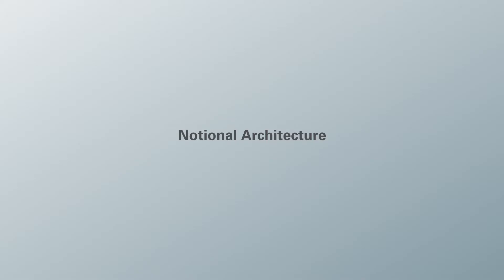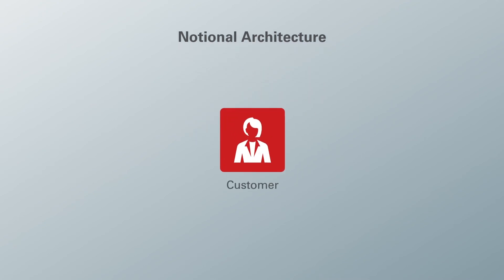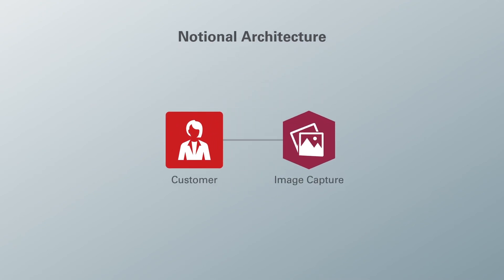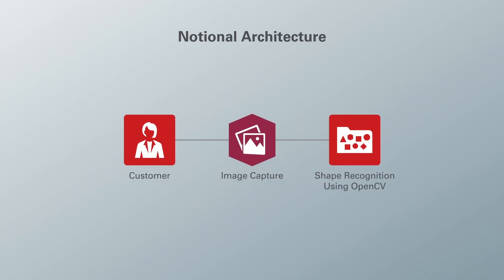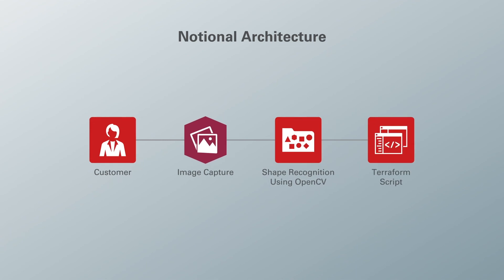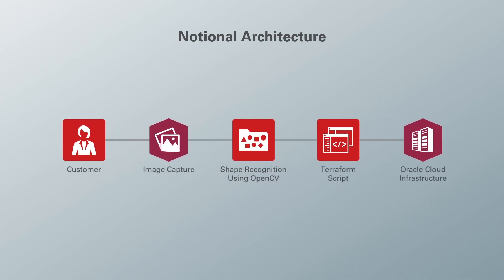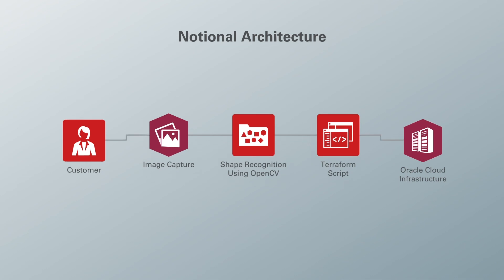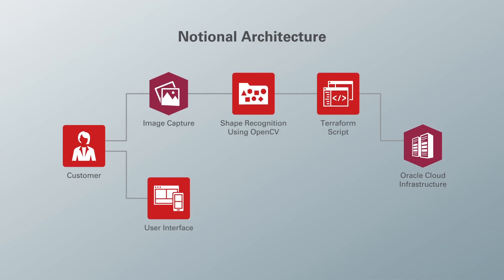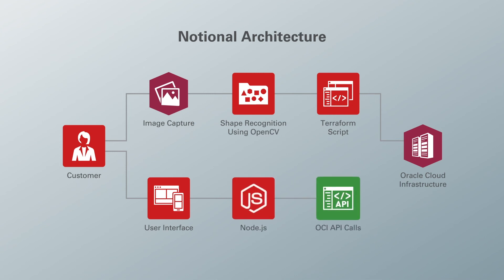The notional architecture explains both forward and reverse engineering. A customer takes a picture of a network diagram, and that image is fed to the shape recognition algorithm using the OpenCV library. It maps the shapes to the respective OCI resources and generates a Terraform script to provision them on OCI. Applying that script, you can deploy a network architecture on OCI within seconds. If you want a summary of what you have on OCI, the customer can use our simplified UI to enter a few parameters such as user ID and tenancy ID, and the Node.js script at the backend processes those parameters to make API calls to OCI.